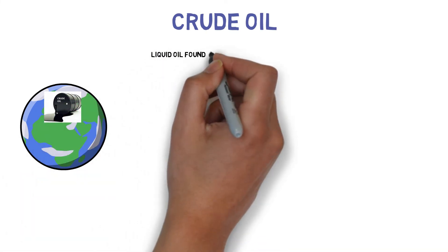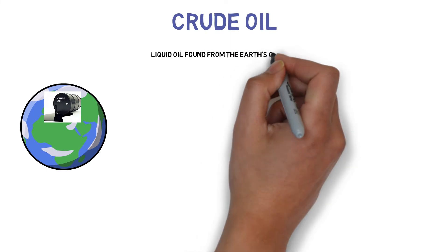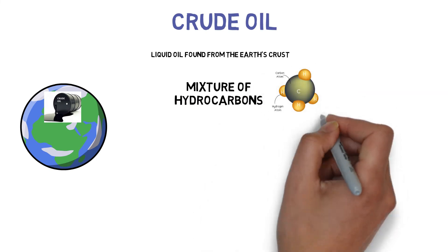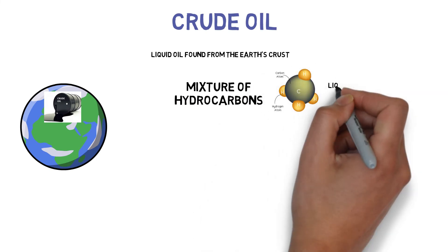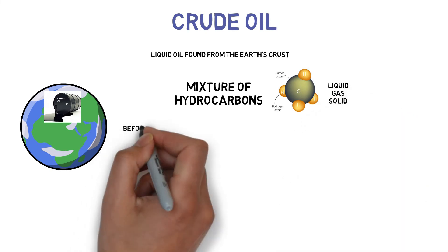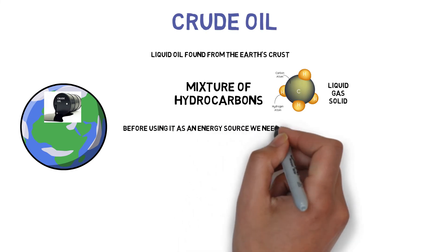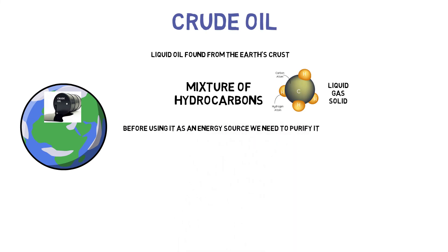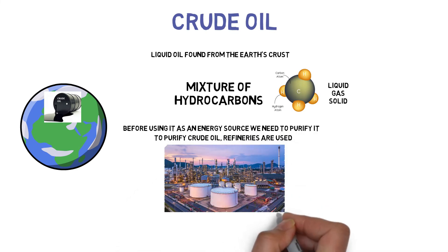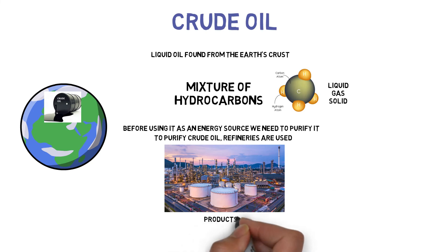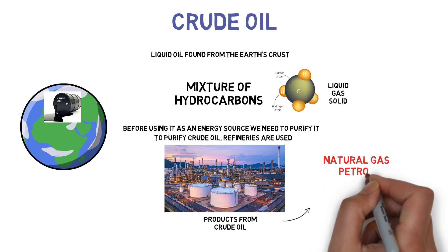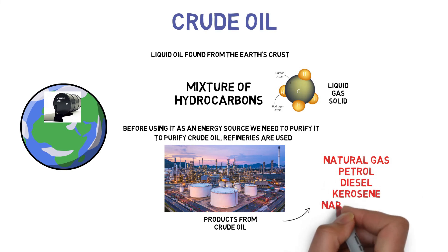Crude oil is the liquid oil found from the earth's crust. It is a mixture of hydrocarbons. It contains not only liquid, but also gas and solid. Before using it as an energy source, we need to purify it. To purify crude oil, refineries are used. From the refinery, we get many products from crude oil, like natural gas, petrol, diesel, kerosene, naphtha, etc.